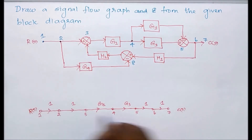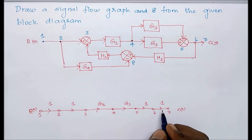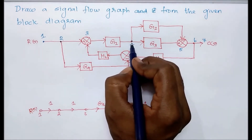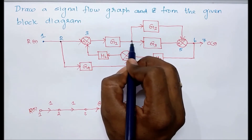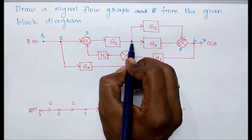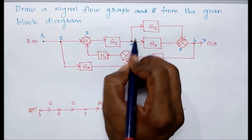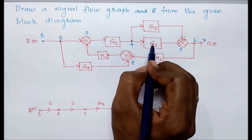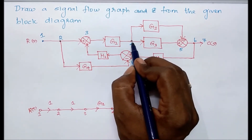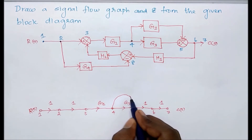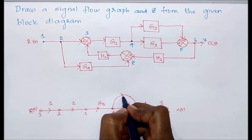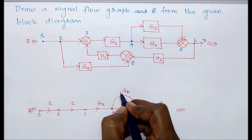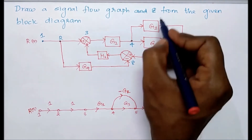Apart from this straight-line forward path, we next have to consider the loops or parallel paths. Loops must start and end at the same point; a parallel path separates and moves towards the next node. From node four, there are two branches separating and moving — these two gains are parallel, so it is a parallel path from node four to node five with gain minus g2.